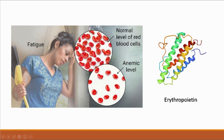Another example of a disease that can be treated with therapeutic proteins is certain types of anemia. Anemia is a condition caused by having abnormally low levels of red blood cells. As you can see in this figure, it shows normal levels of red blood cells — a person who is anemic has too few. One reason why a person may have too few red blood cells is they could be lacking a protein called erythropoietin, which is important for allowing red blood cells to develop into their fully mature form. So people who lack this protein may be anemic and may be treated by supplementation with this protein in a medication.